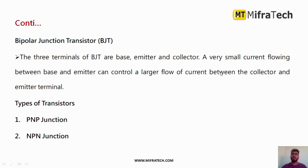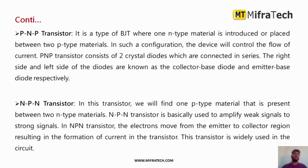A small amount of current flows between the base and emitter, but a large amount of current flows between the collector and emitter. There are two types of BJTs: one is PNP and the other is NPN.